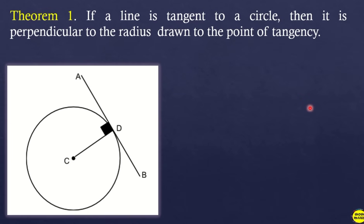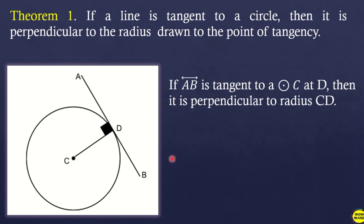Here are the different theorems on tangent lines. Theorem 1: if a line is tangent to a circle, then it is perpendicular to the radius drawn to the point of tangency. As you can see in the illustration, if line AB is tangent to circle C at point D, then it is perpendicular to radius CD.